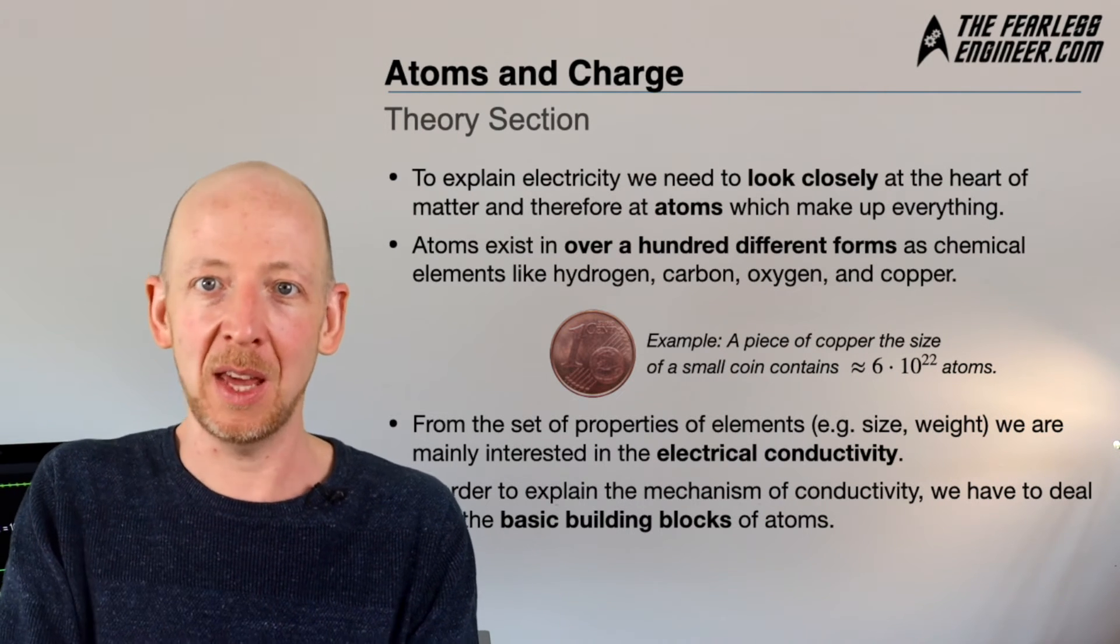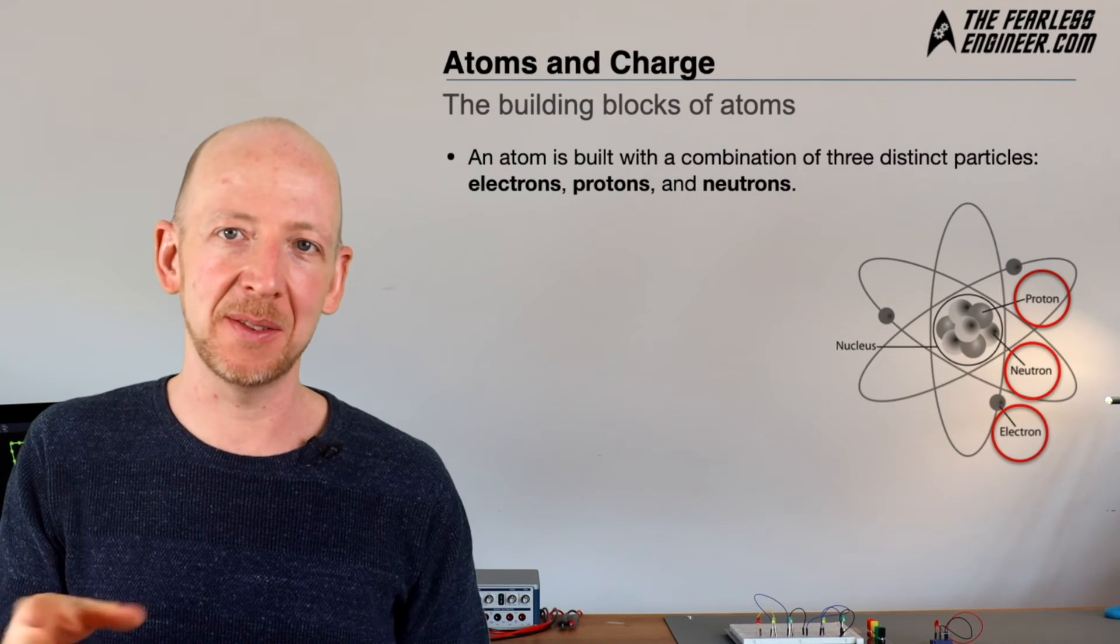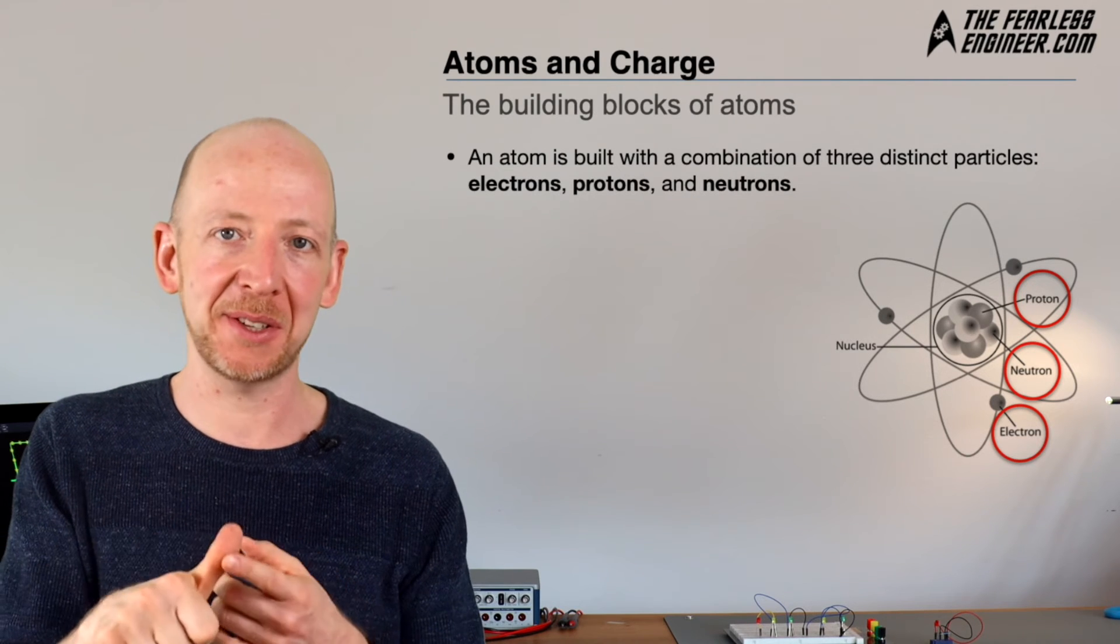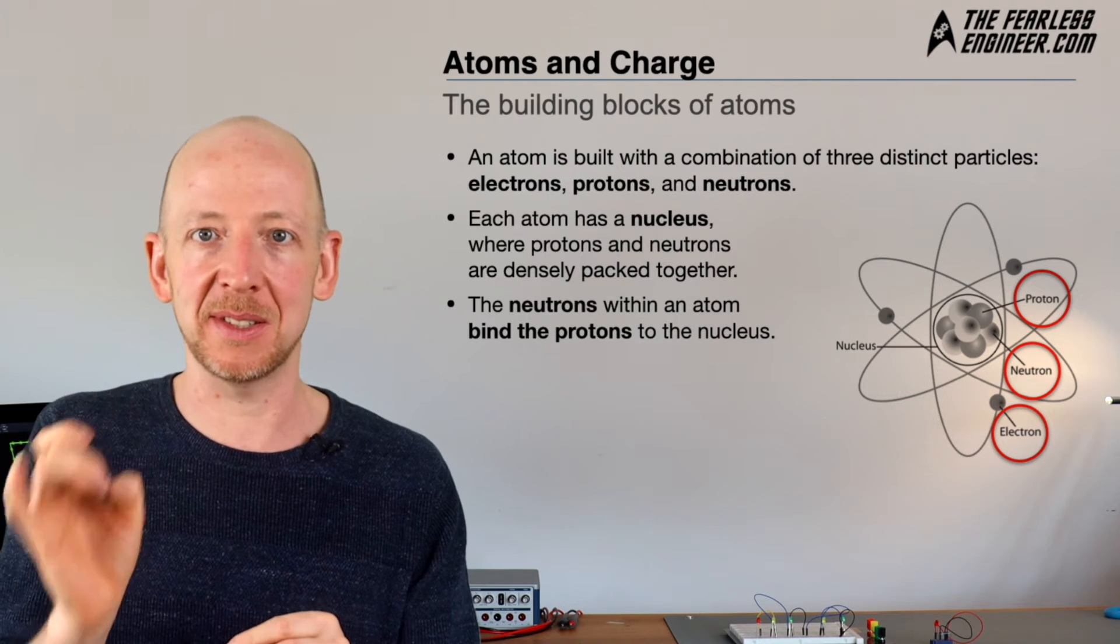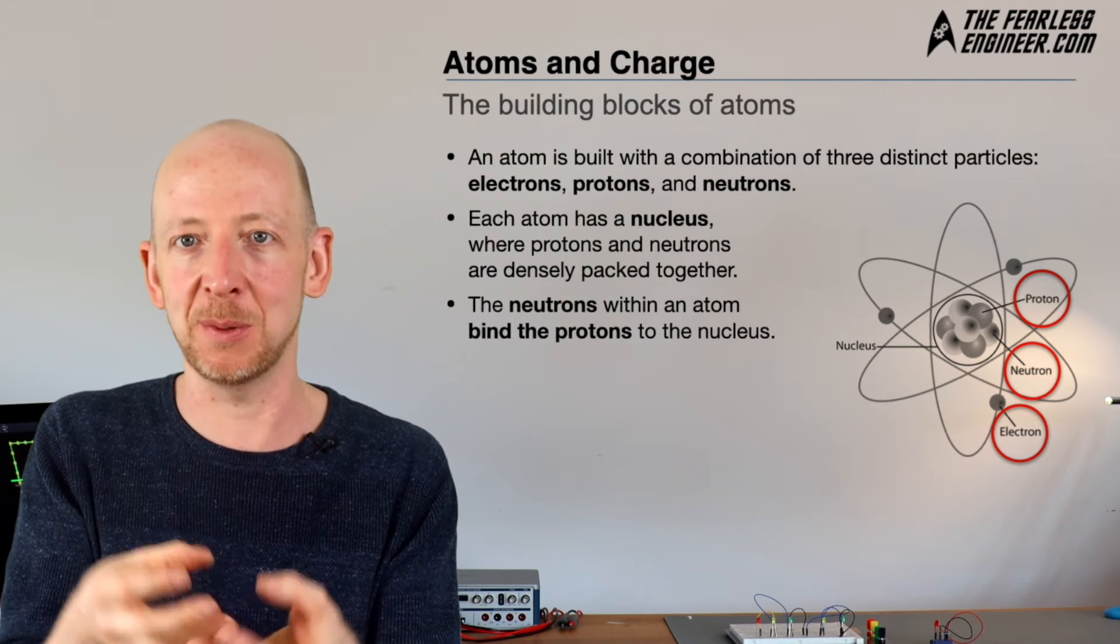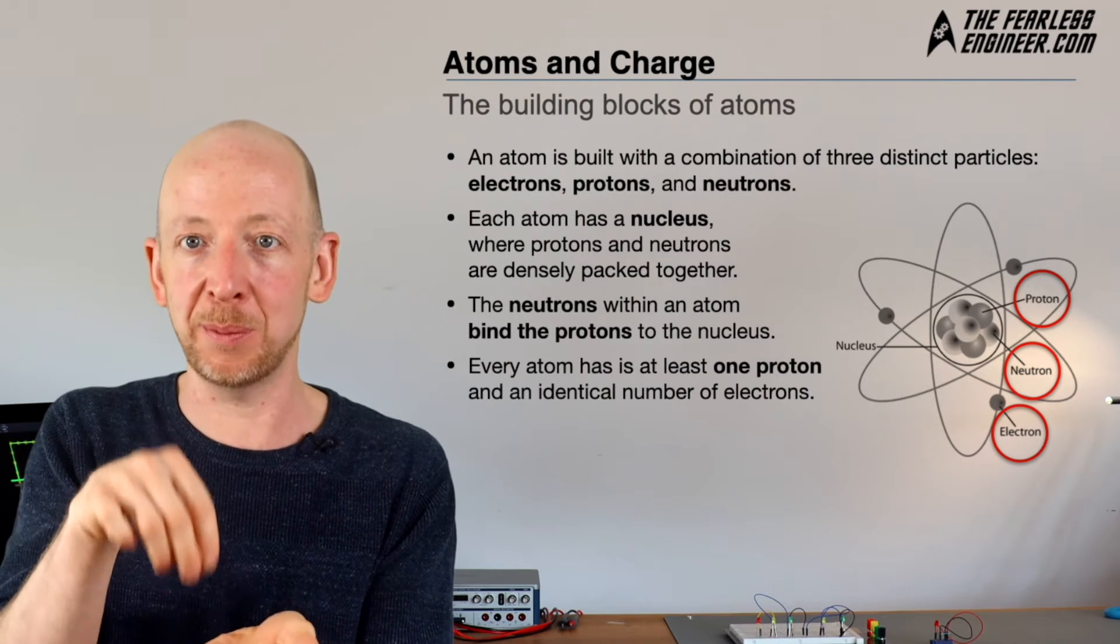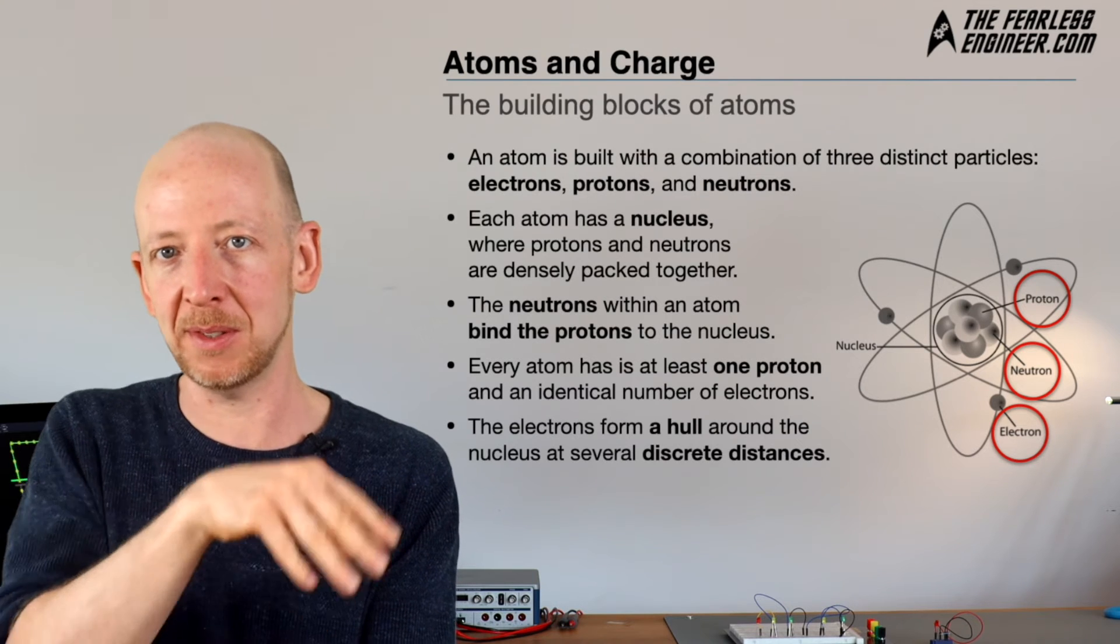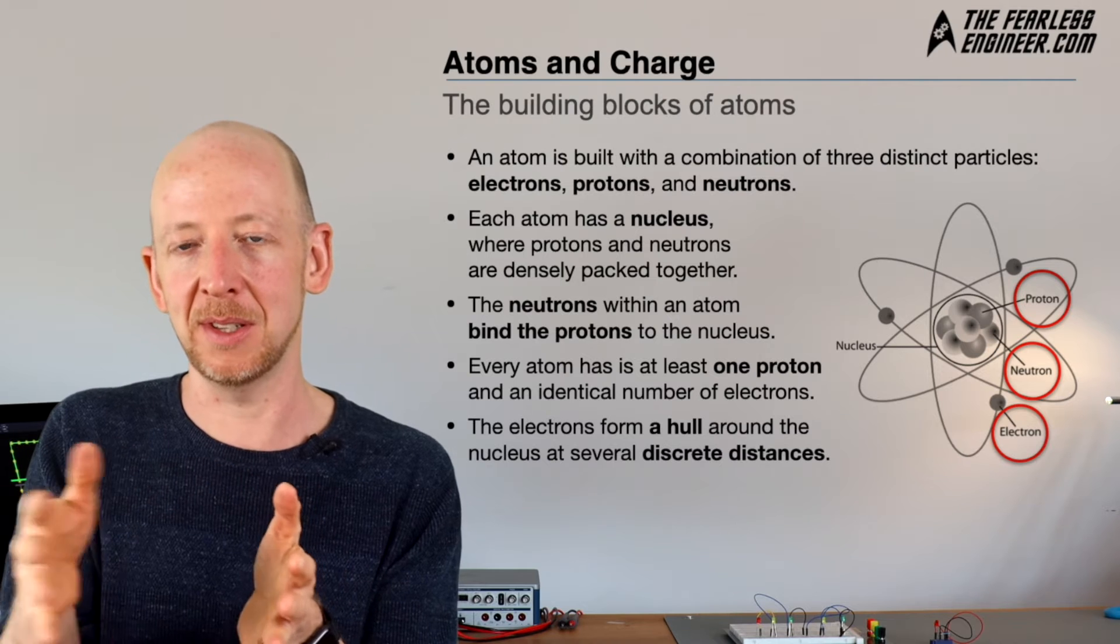As you can see in the picture on the right, an atom is built from a combination of three distinct particles: electrons, protons, and neutrons. Each atom has a nucleus at its center—a densely packed lump of protons and neutrons held together with a very powerful force. Every atom has at least one proton, and electrons orbit around this nucleus at discrete distances. The distance from the outermost electron to the core is basically the radius of the atom.